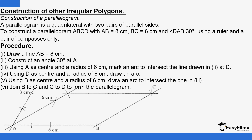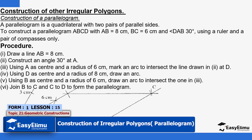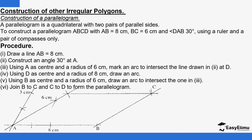A parallelogram can be described as a polygon with two pairs of parallel sides, and it is one of the polygons considered to be irregular. To construct a parallelogram, there should be sufficient information provided, as there is no definite approach when it comes to construction of irregular polygons. That sufficient information will guide on how to construct them, of which a parallelogram is part.